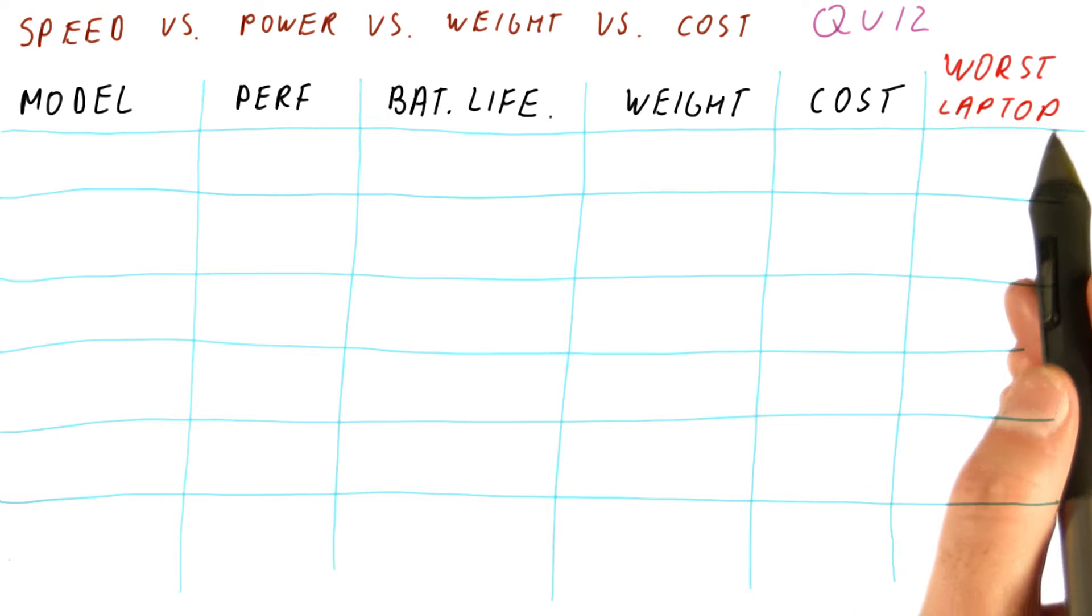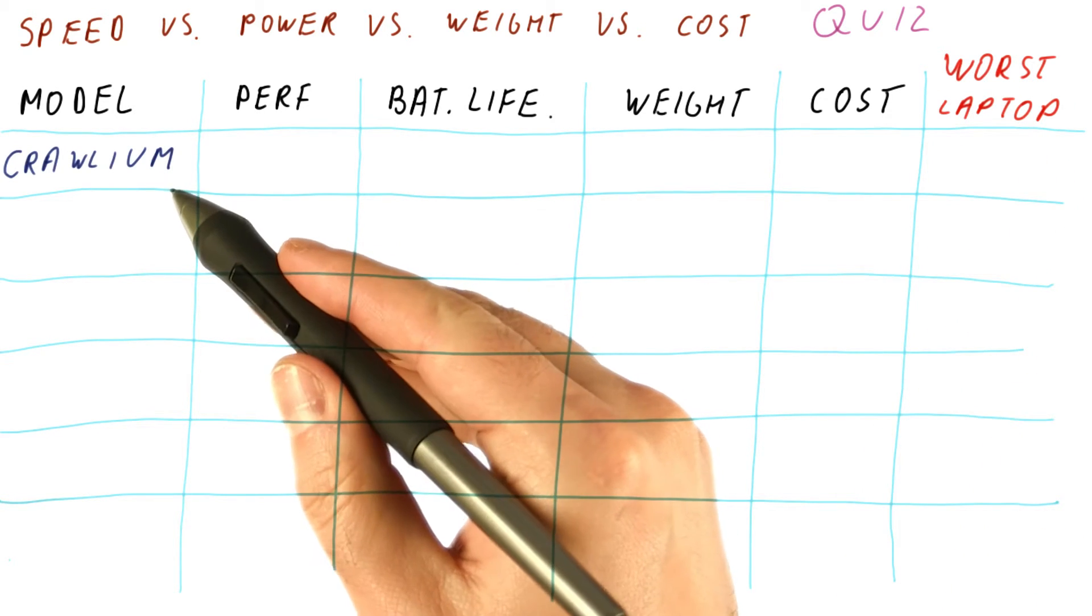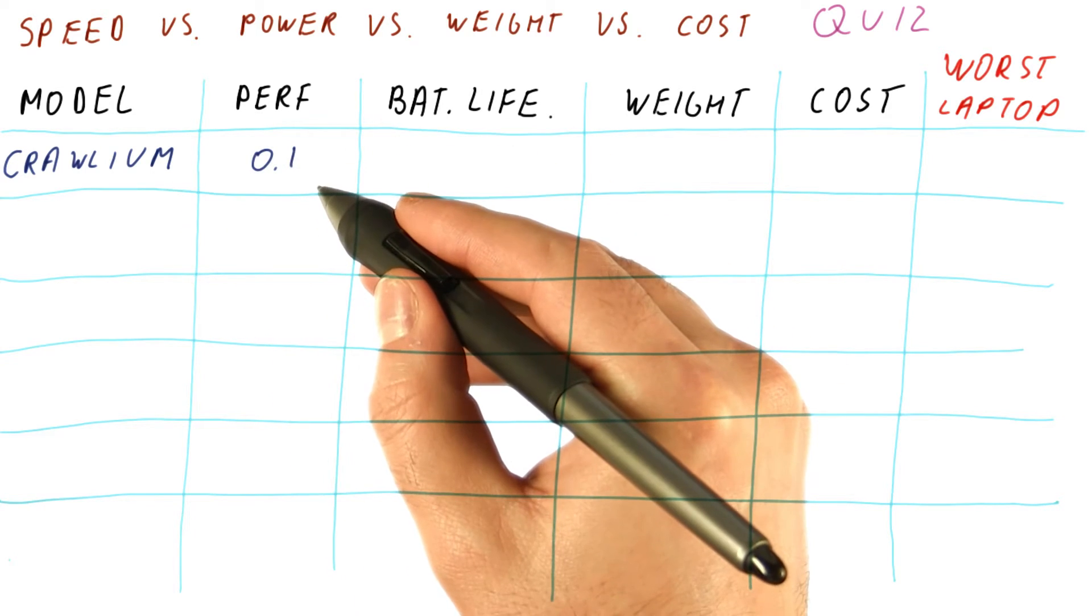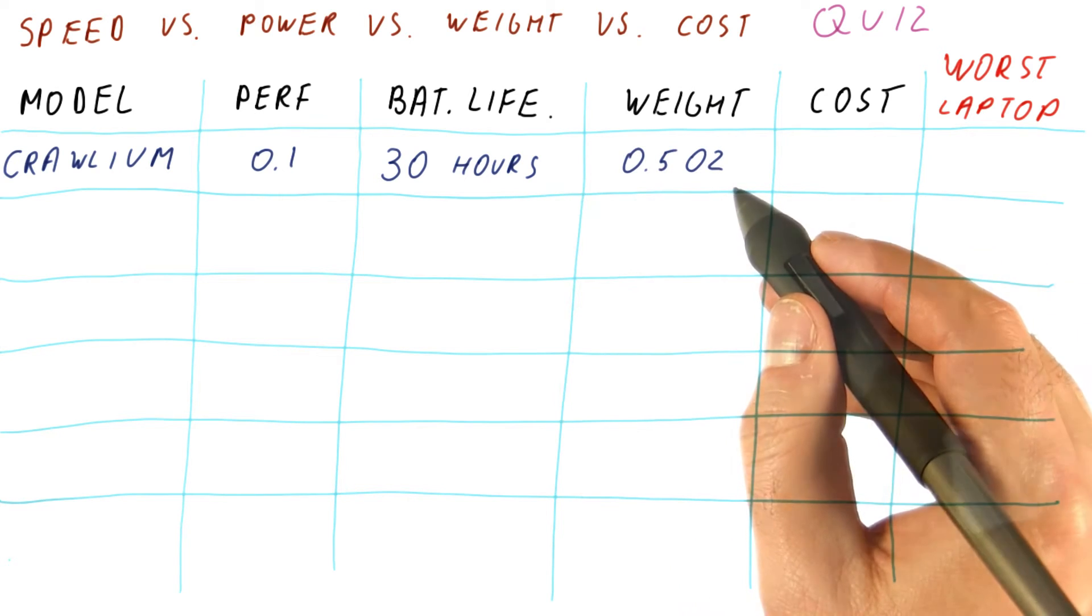The question for you is which one of these will be the worst for laptops? The first model is the Crolium. It has very little performance, very long battery life, extremely light, and they're cheap.